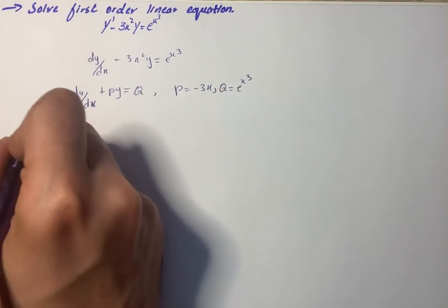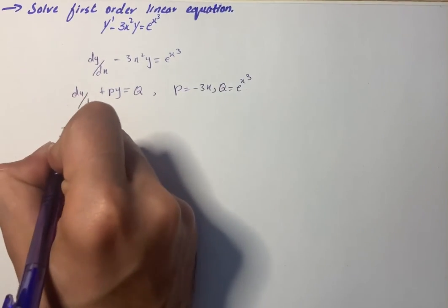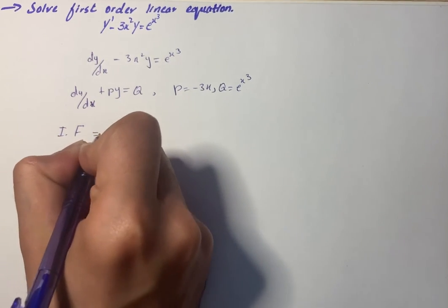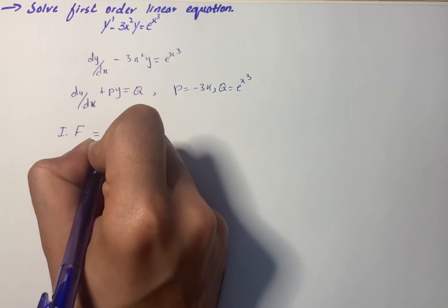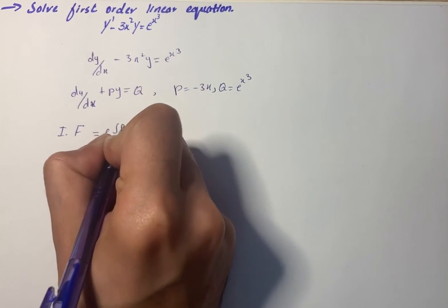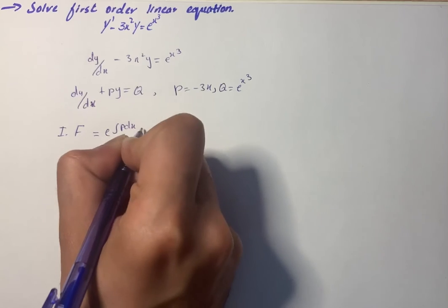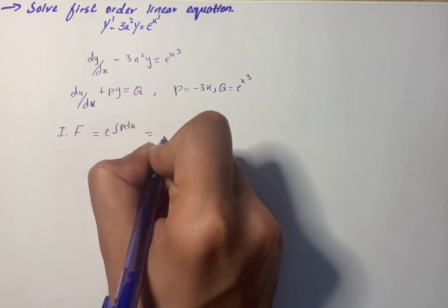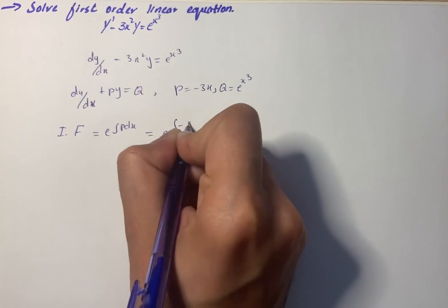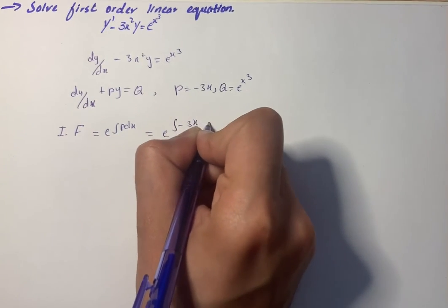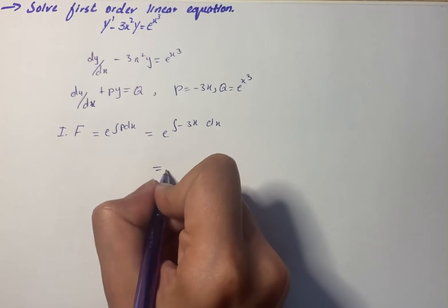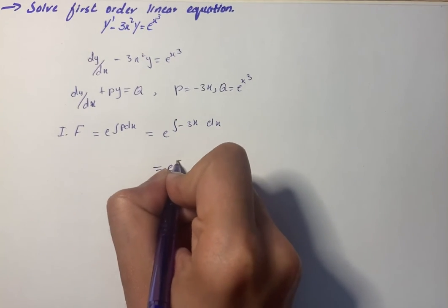We know that the integrating factor is equal to e raised to the power of the integral of P dx, which is e raised to the power of the integral of minus 3x squared dx.